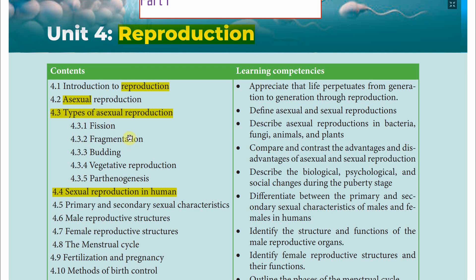We will talk about Fragmentation — what is Fragmentation in Asexual Reproduction. The third type is Budding — what is Budding. On the fourth point we will talk about Vegetative Reproduction, or Vegetative Propagation. On the fifth part we will talk about Parthenogenesis.